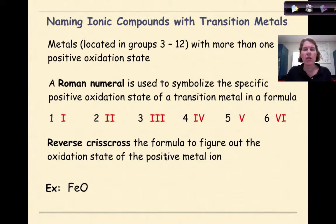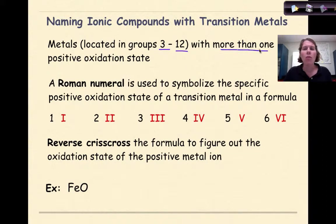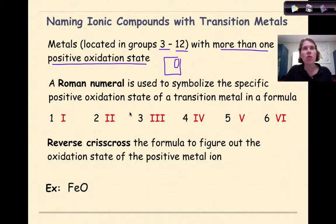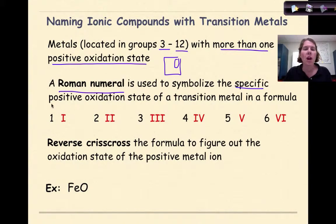Now let's talk about naming ionic compounds with transition metals. The transition metals are located in groups 3 through 12 on the periodic table. These elements typically have more than one positive oxidation state — you'll notice more than one charge in the upper right-hand corner of their periodic table symbol. To represent a transition metal with more than one positive oxidation state, we use Roman numerals to indicate the specific positive oxidation state of the transition metal in the formula.